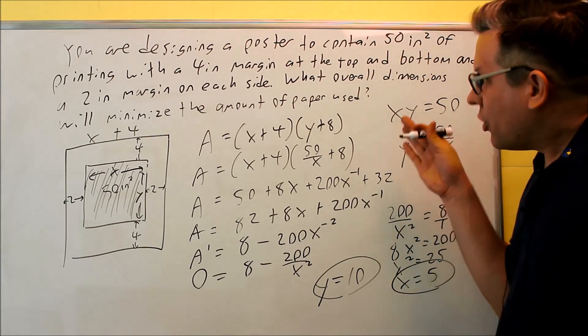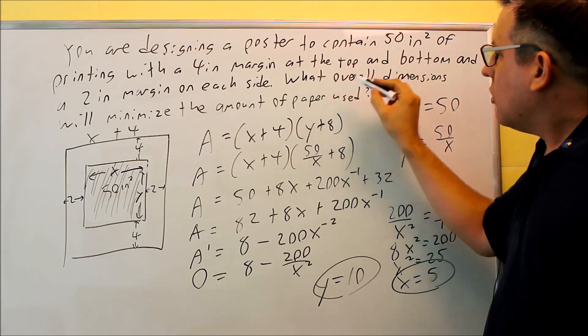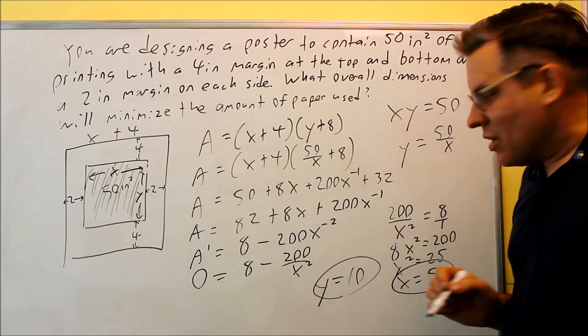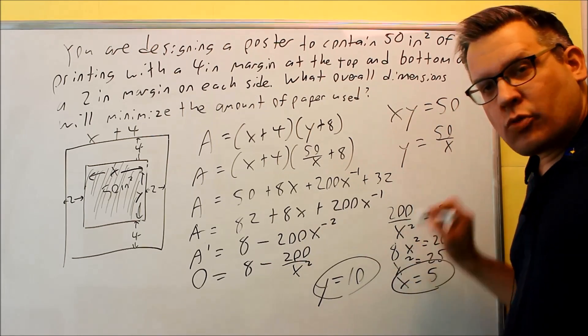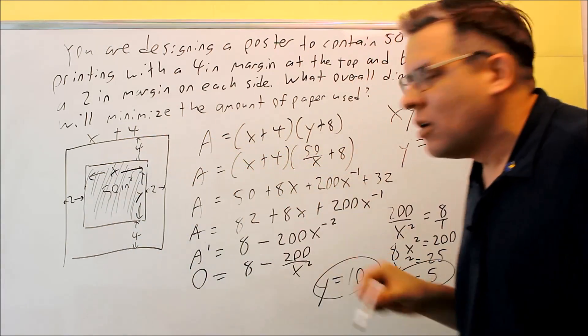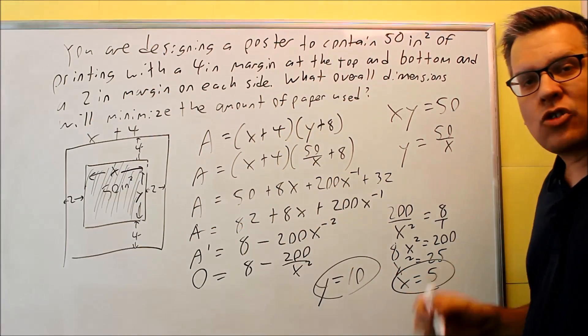Is that the answer to the question? Well, let's read it and make sure that we've answered what they're asking for. It says, what overall dimensions will minimize the amount of paper used? This is not our overall dimensions. We just solve for x and y. We've only basically found the dimensions of the inside printing material. We've got to find the dimensions for the whole outside.